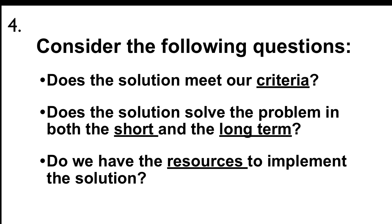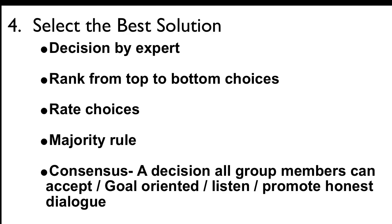The fourth step is select the best solution. Consider the following questions: Does the solution meet our criteria? Does the solution solve the problem in both the short and long term? Do we have the resources to implement the solution? Consider decision by expert — let someone who has high credibility narrow the list. Rank choices from top to bottom. Ask group members to evaluate each solution on a scale from one to five; those solutions rated best get the most serious discussion. Consider majority rule, where group members vote for the ideas they like. A consensus is a decision all group members can accept. Three primary strategies that help groups reach consensus: be goal-oriented, listen to each other, and promote honest dialogue and discussion.